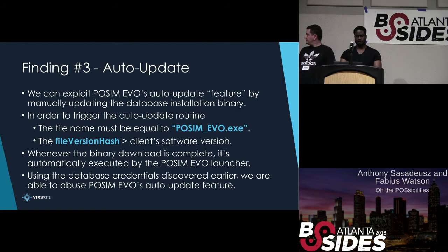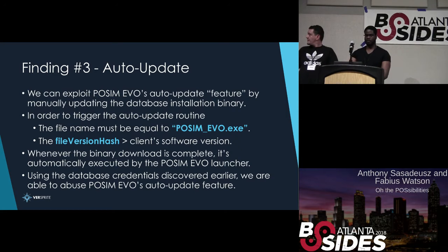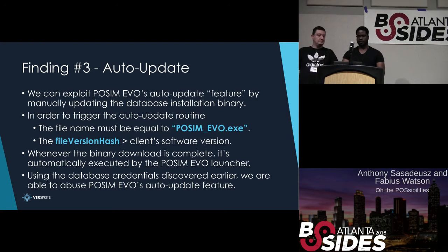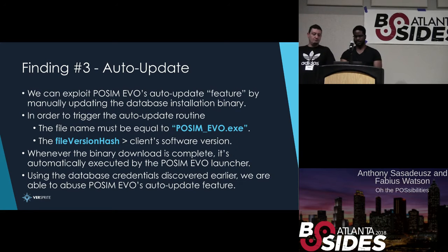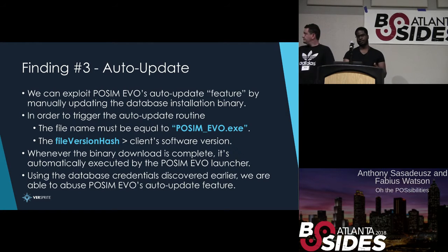We log into the database server and switch to the Possum database context. We get the version number stored in the database — it's 1.15.5. We update it to 1.15.6, then upload a binary named possum_evo.exe. When that's uploaded with the newer version and the user launches the application, it prompts them to update from 15.5 to 15.6. After the user clicks Download Update, it downloads and executes it. The binary we uploaded is a Calculator application, so instead of launching Possum, it launches Calculator.